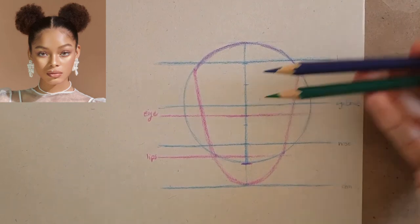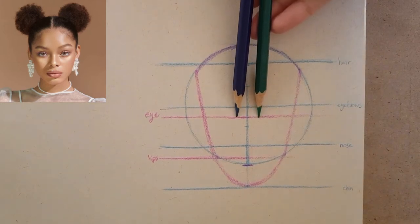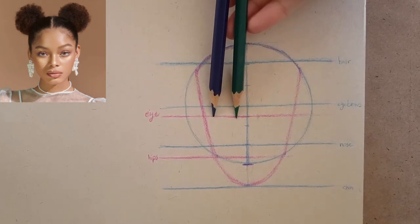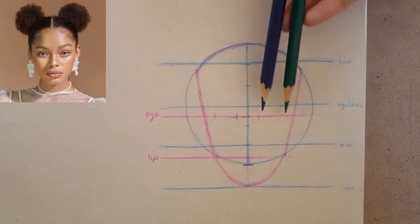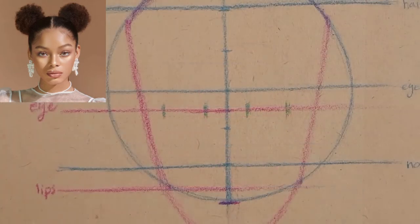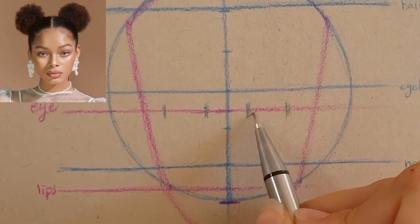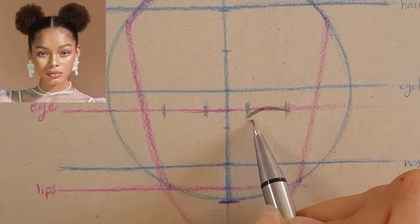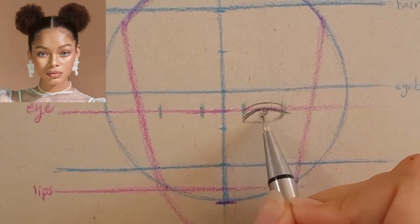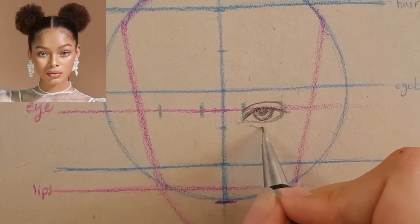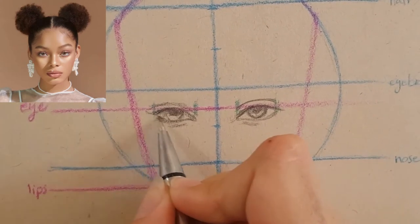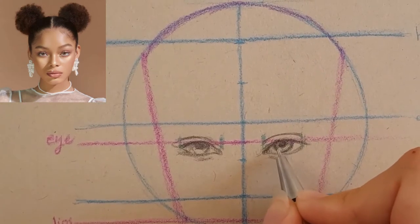It's time to add the features, starting with the eyes. The eyes are one eye-width apart from each other, so I take one unit, bring it down onto the eye line, and can easily find the placement of the eyes. I draw the eyes and eyebrows based on the model and their proportions from the guidelines — the eye ends up a little lower than the eye line here. In the next lesson I'll show you how to draw symmetrical eyes when drawing a character from imagination.